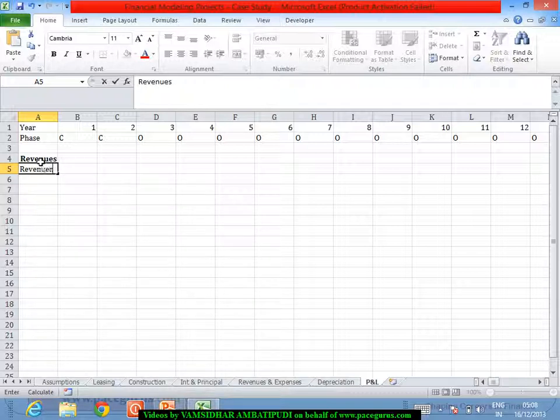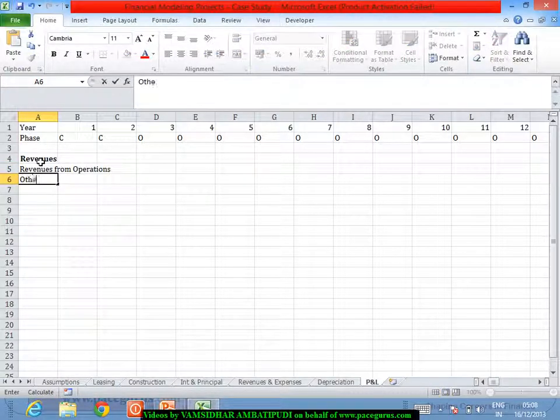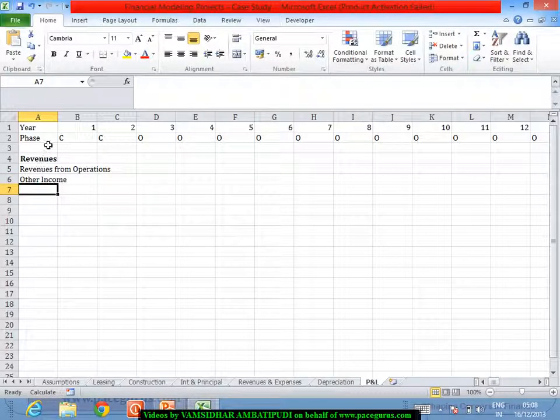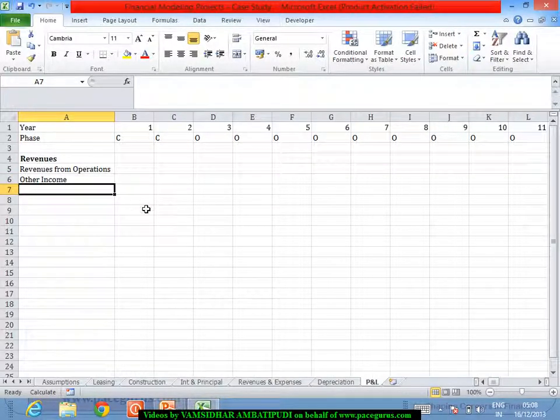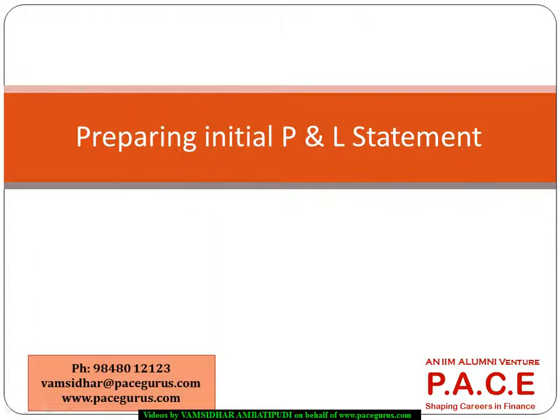operating revenues or revenues from operations, and I also call as other income. Where does this other income come from? I have two sources for other income. It may so happen that every year, after revenues, expenses and various other scenarios, every year I am left with a cash surplus.